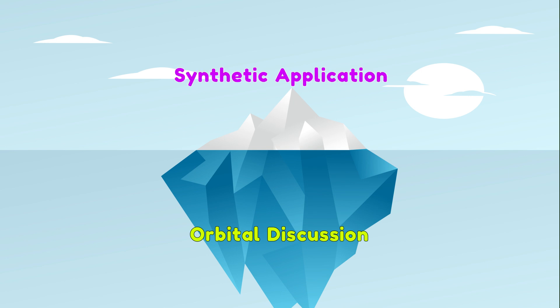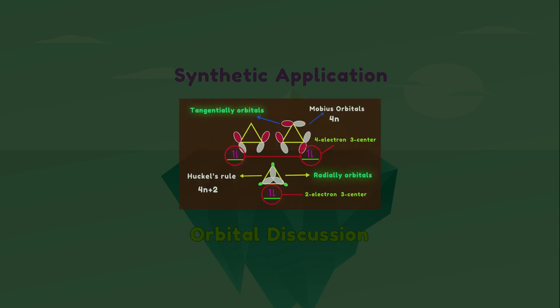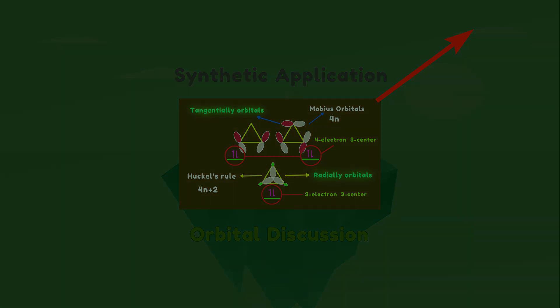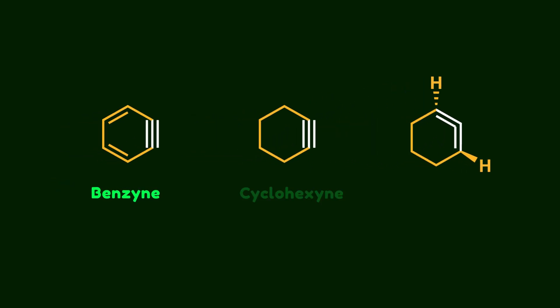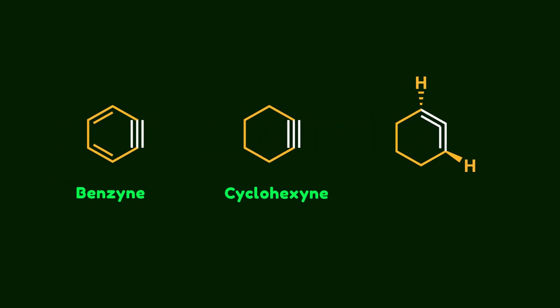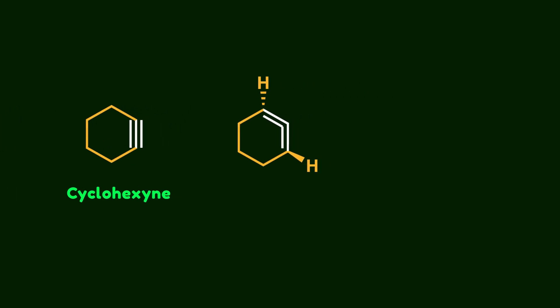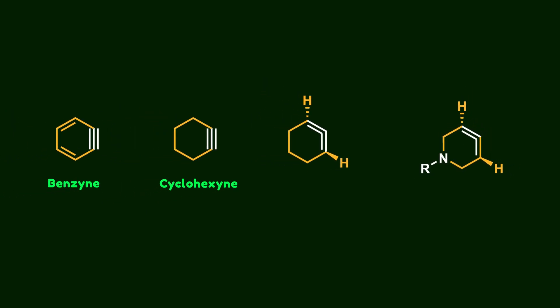Now let's jump to the tip of the iceberg, which is the synthetic application of cyclic allenes. I've also created a video about cyclopropane — if you are interested in how orbitals affect the reactivity of cyclopropane, check out that video. The chemistry of strained organic compounds has always been fascinating for organic chemists. Although cyclic strained compounds such as benzyne and cyclohexyne are well studied, the chemistry of cyclic allenes has remained largely untapped, especially the utilization of cyclic allenes containing a heteroatom, which is rare in the realm of organic synthesis. Professor Neil Garg's group focuses on the chemistry of strained compounds, particularly strained allenes.